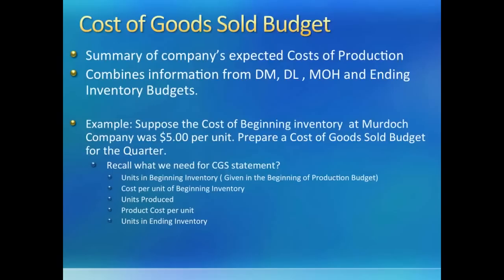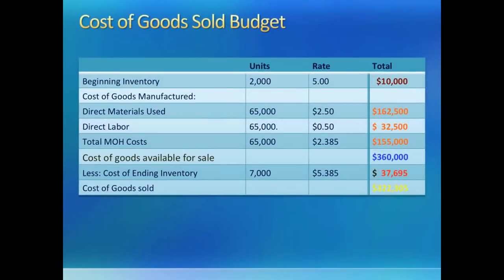Let's look at Murdoch's cost of goods sold statement. We start with beginning inventory of 2,000 units at $5 a unit, then add direct material, direct labor, and manufacturing overhead costs from the respective budgets. Remember, we need cost of direct material used, not cost of direct material purchased. Also, from the manufacturing overhead budget, we need total manufacturing overhead costs, not the cash spent on them. Once we have costs of goods available, we subtract the ending inventory figure from the ending inventory budget, giving us a total cost of goods sold of $322,340.